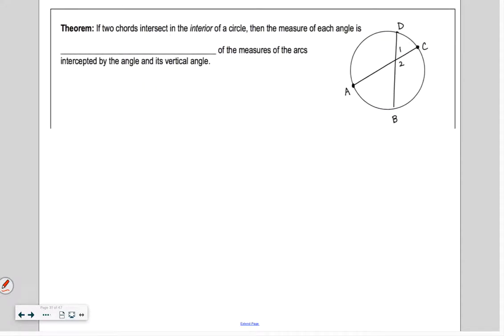So here's our first theorem. So if two chords intersect in the interior of a circle, then the measure of each angle is half of the sum of the measures of the arcs intercepted by the angle and its vertical angle. Oh man, there's a lot going on here. I sometimes refer to this as a bow tie. Can we find a bow tie in this picture? It's a little lopsided.